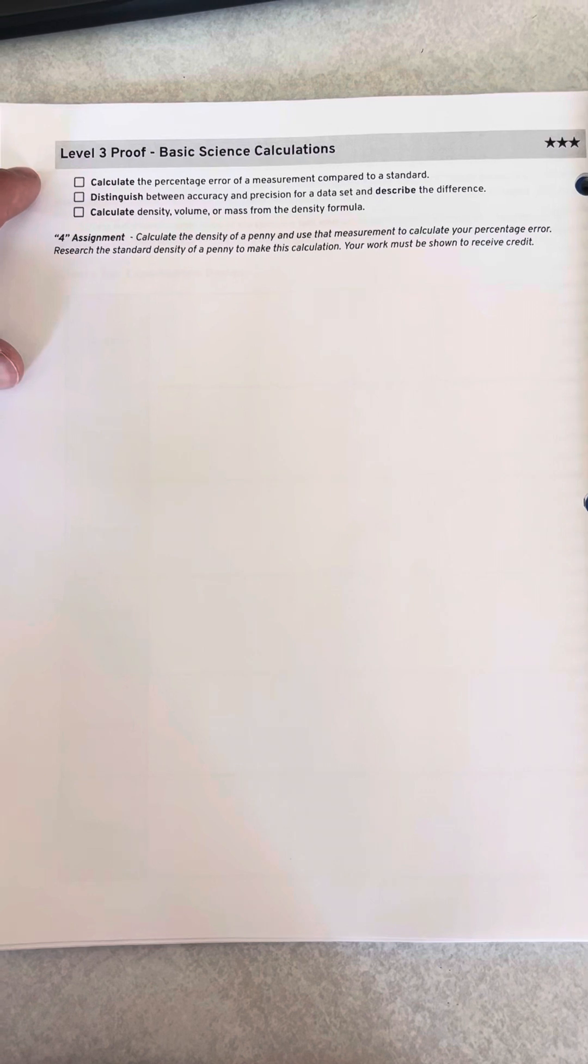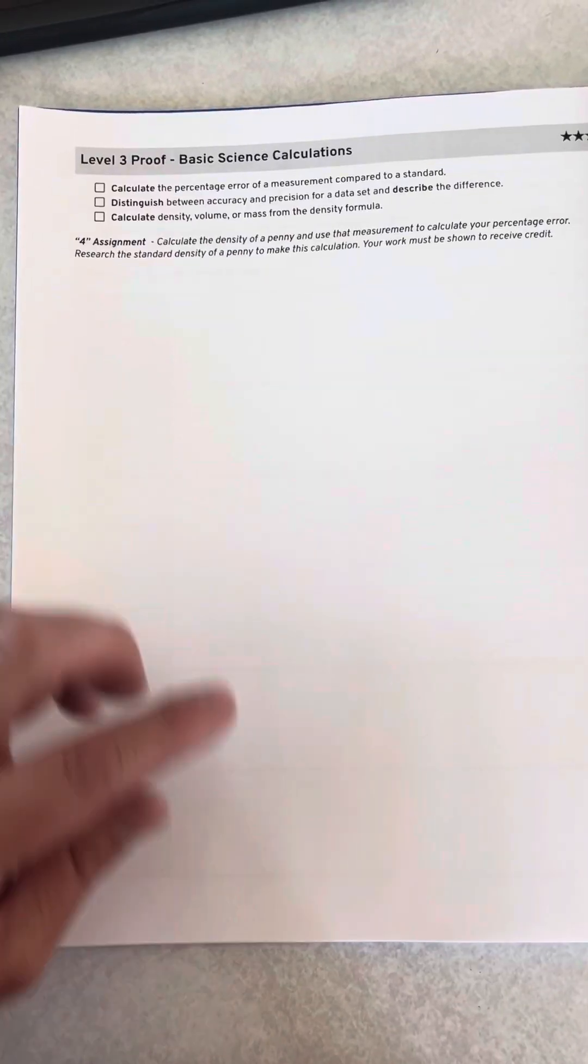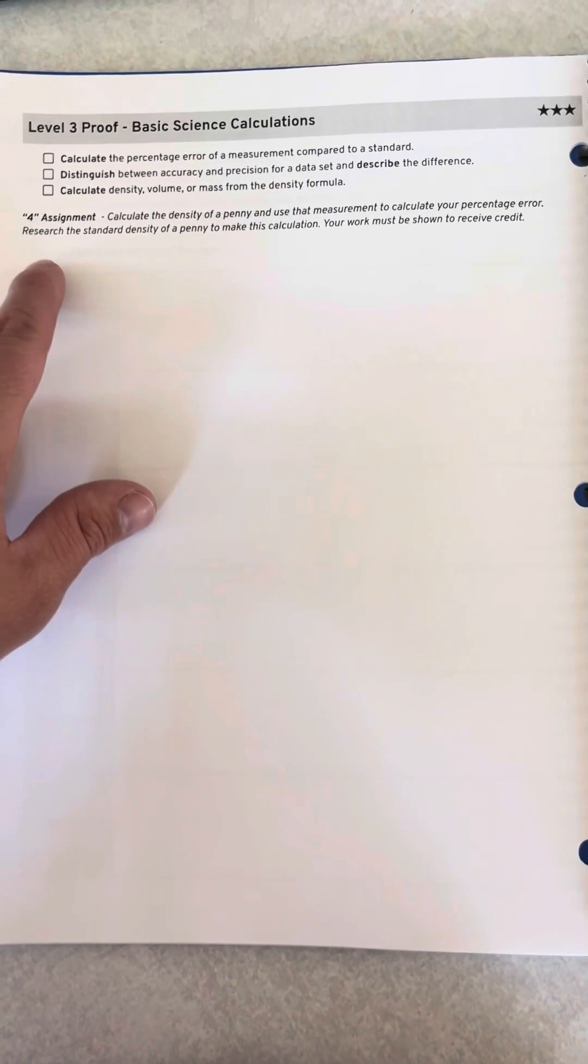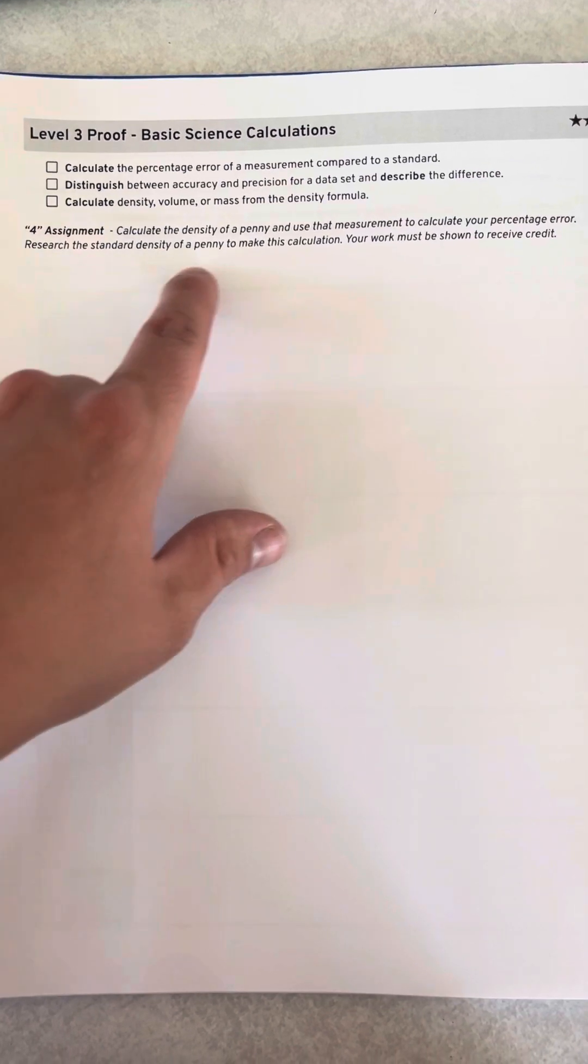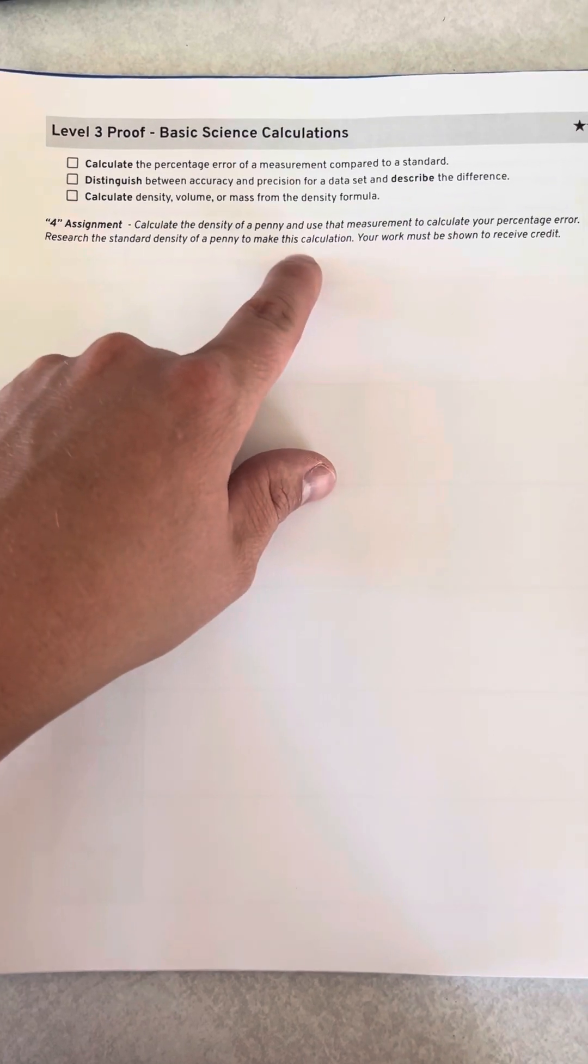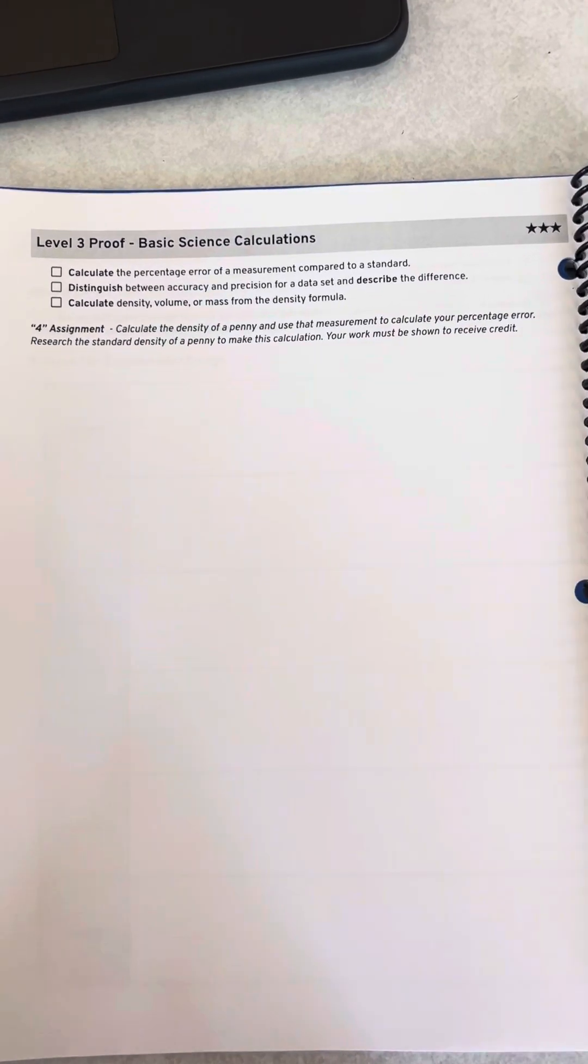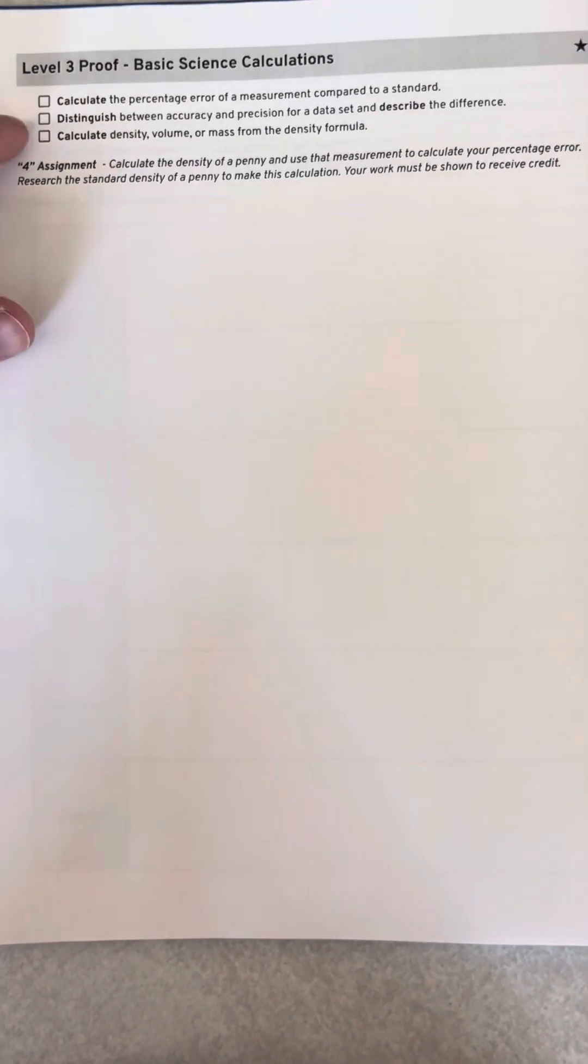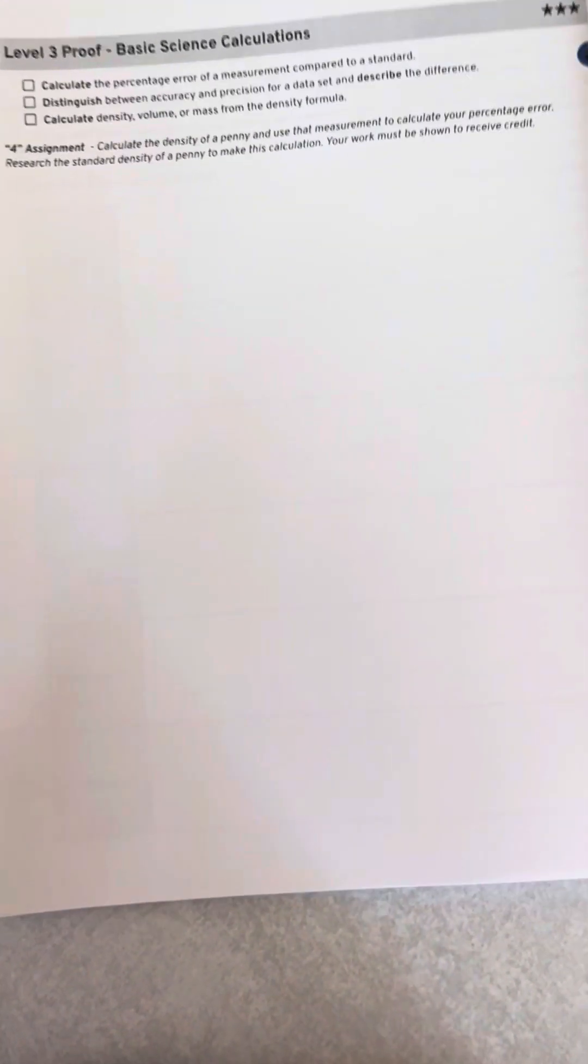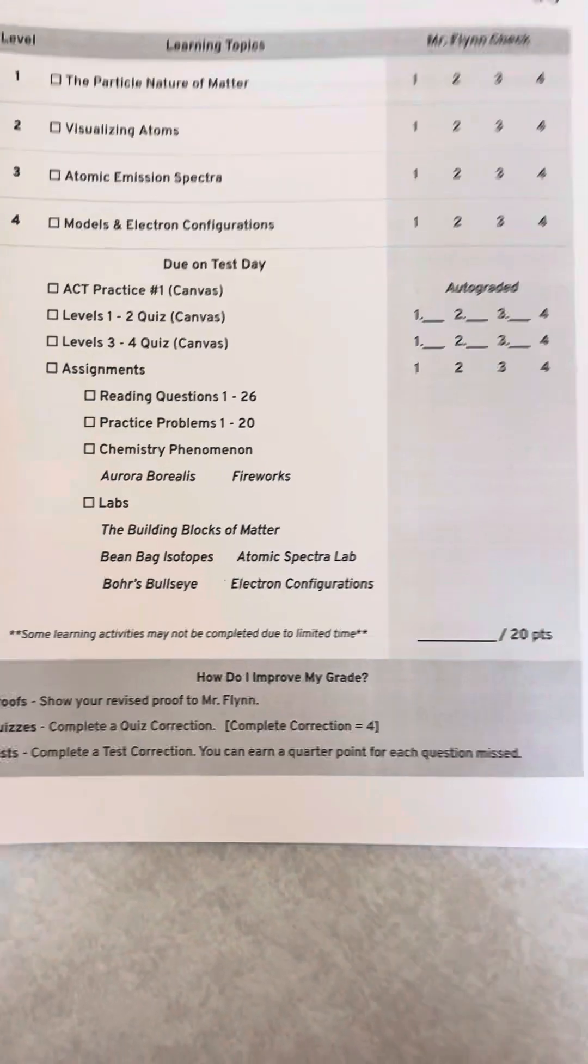Same here. Another three things for them to work on. I can calculate the percentage error of a measurement compared to a standard. Actually that's my four assignment. My four assignment is to calculate the density of a penny and use the measurement to calculate your percent error. Research the standard density of a penny to make this calculation. So I'm making them go outside the class to figure out what's the average weight of a penny and how does it compare to your penny. So they're actually having to put in work outside of class to prove all of these concepts together.